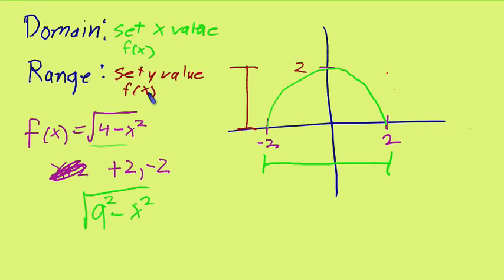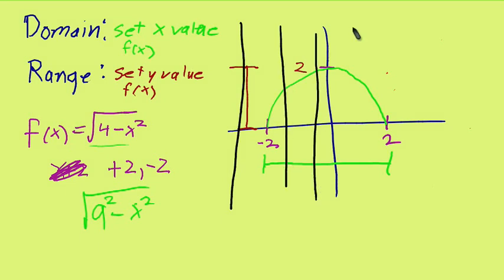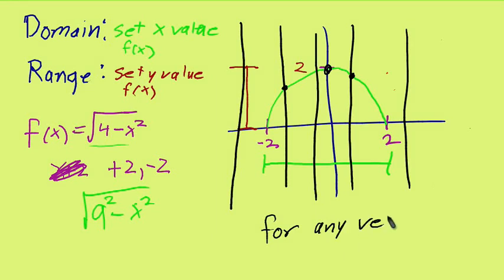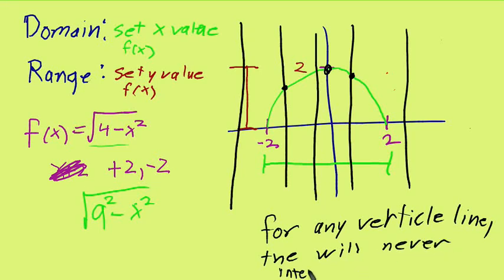And this is going to bring me back to something that I actually put into the first lecture, and that's our vertical line test. Anywhere on our graph, we can draw vertical lines. And if at any time, our vertical line intersects more than one place on the graph, then f of x is not a function. So for any line, any vertical line, the line will never intercept the graph more than once.